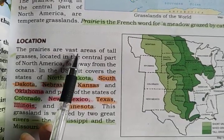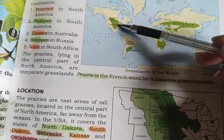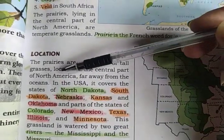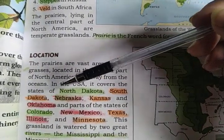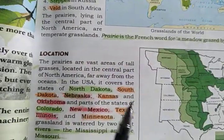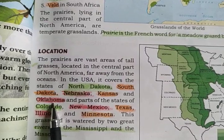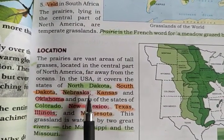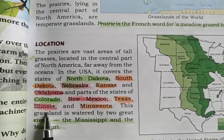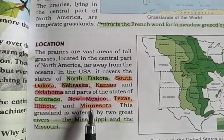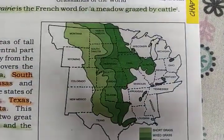The prairies are vast areas of tall grasses located in the central part of North America, far away from the ocean. In the USA it covers the states of North Dakota, South Dakota, Nebraska, Kansas, Oklahoma, and some parts of Colorado, New Mexico, Texas, Illinois, and Minnesota. You can find all these areas on this map.